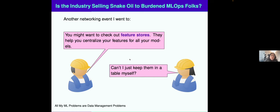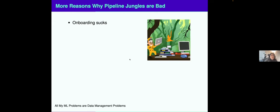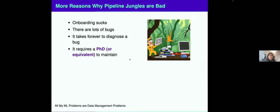But it's not just this feeling of getting sold snake oil that's a bad thing about pipeline jungles. Lots and lots of reasons why pipeline jungles suck. Onboarding sucks. There are tons and tons of bugs that come up. It takes forever to diagnose a bug. You don't even know where it is. I really think it requires some sort of PhD or equivalent of experience. You work for so many years and collect all this expertise just to be able to maintain or have hope of maintaining these pipelines in production.